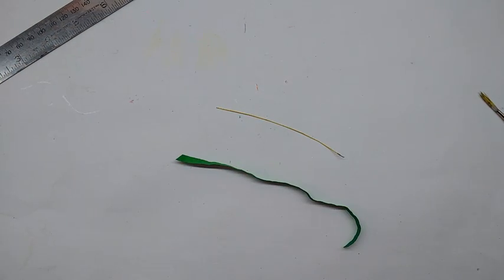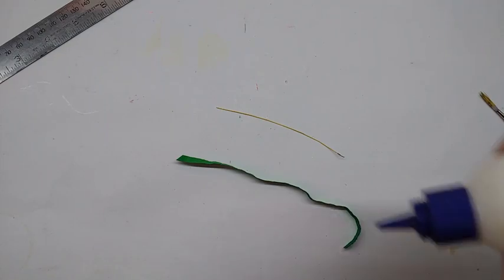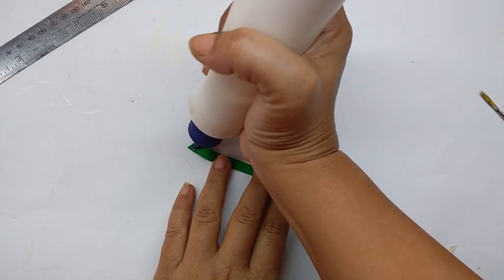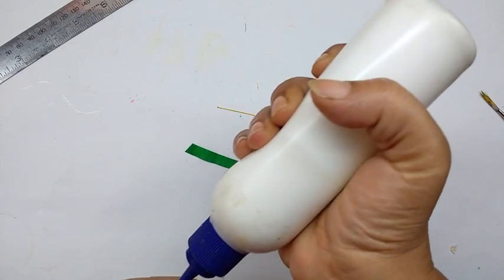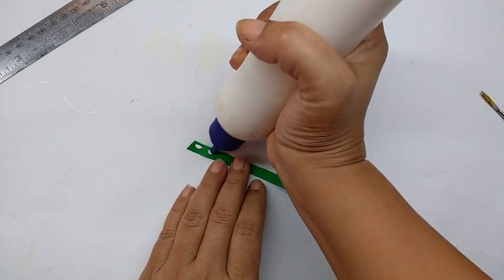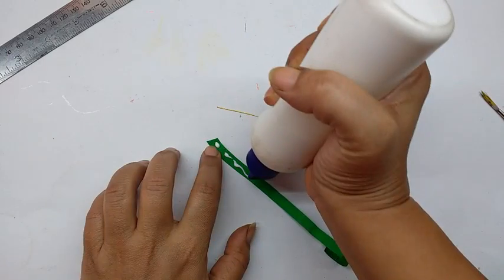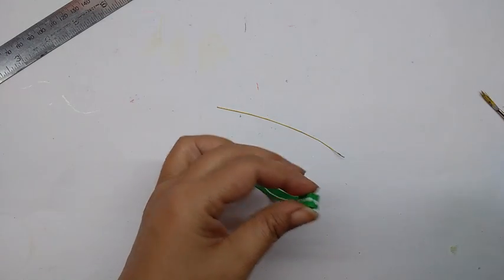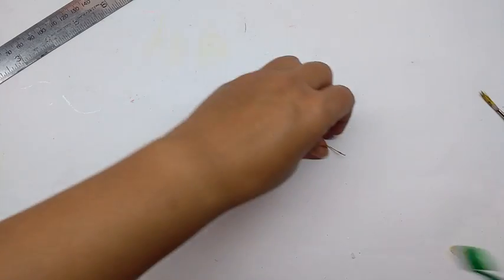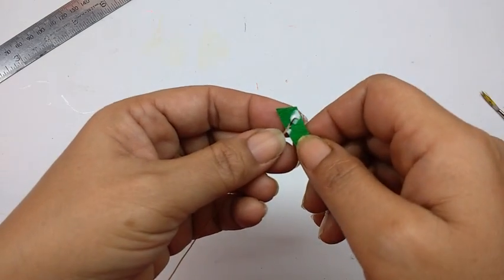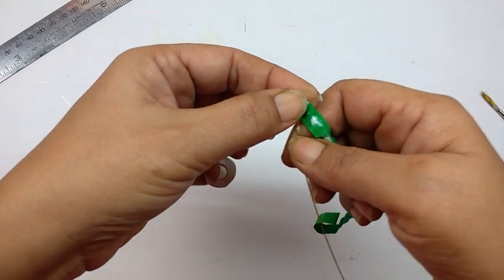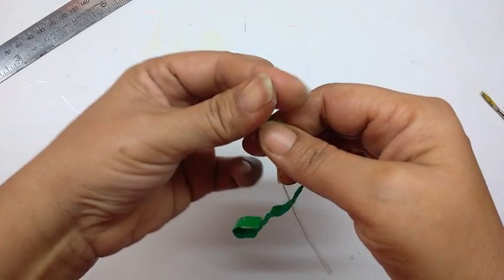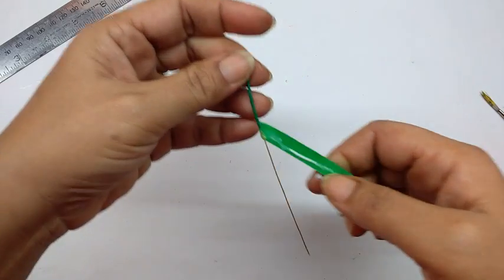Apply glue on it and wind this on the wire tightly.